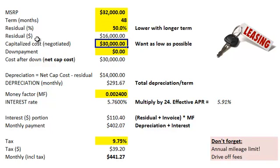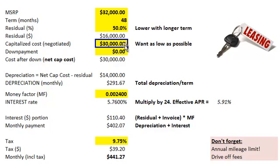Now here's the most negotiated item — what's called the capitalized cost, or cap cost. It's just the price of the car. We're leasing it, but it's still the price we're paying. In finance, we always want to know the price we're paying for something — we cannot just rely on the monthly payment. The cap cost is the negotiated price, and unless the car is really in demand, we want it to be lower than the MSRP and as close as possible to the dealer's invoice cost. I've assumed here that we've negotiated $2,000 off the MSRP, down to $30,000 — that's our capitalized cost.